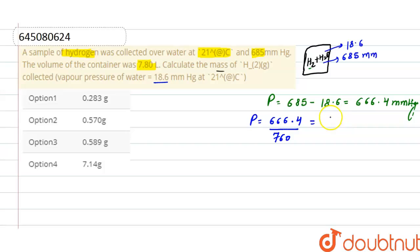Now as we know, PV is equals to nRT, and this is our equation. Putting the values here: pressure is 0.8768, volume is 7.80, and n is the number of moles.